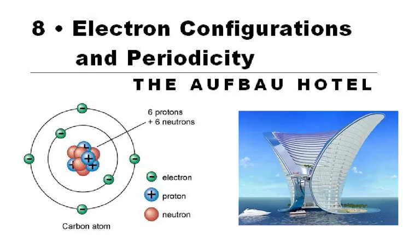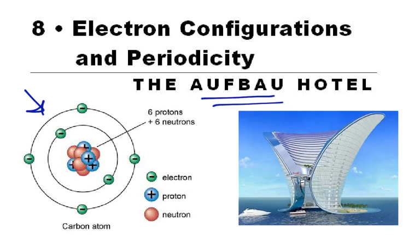Everyone has seen atoms that look like this, where we have the protons and neutrons in the nucleus and the electrons going around it somehow. Our job in this unit is to go back and assign the electrons around the central nucleus. We're going to use a model for this, something called the Aufbau Hotel.